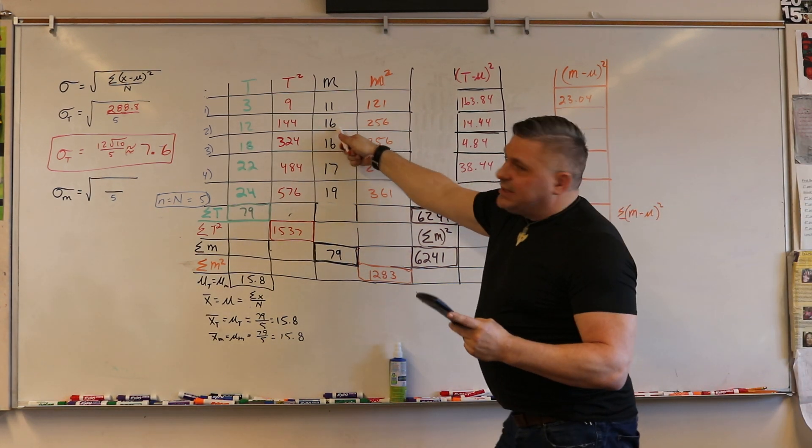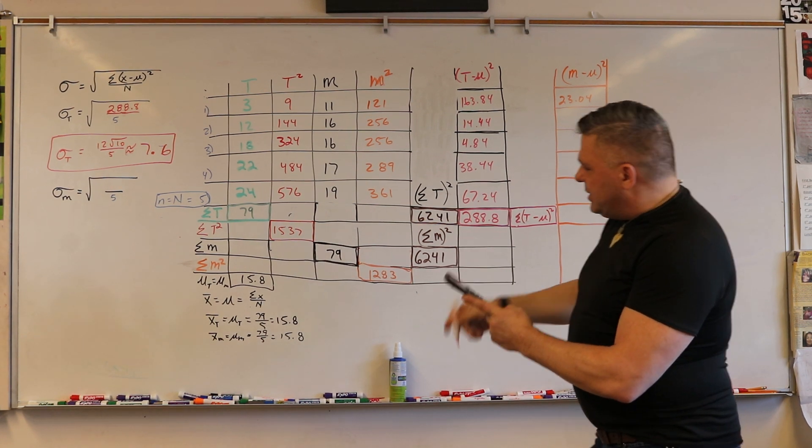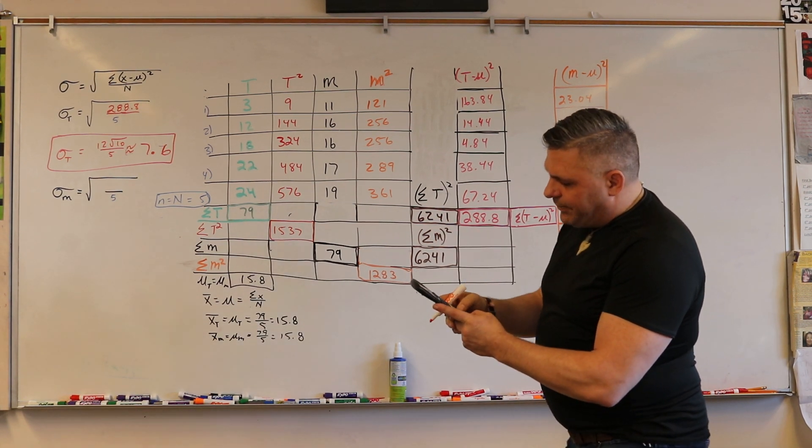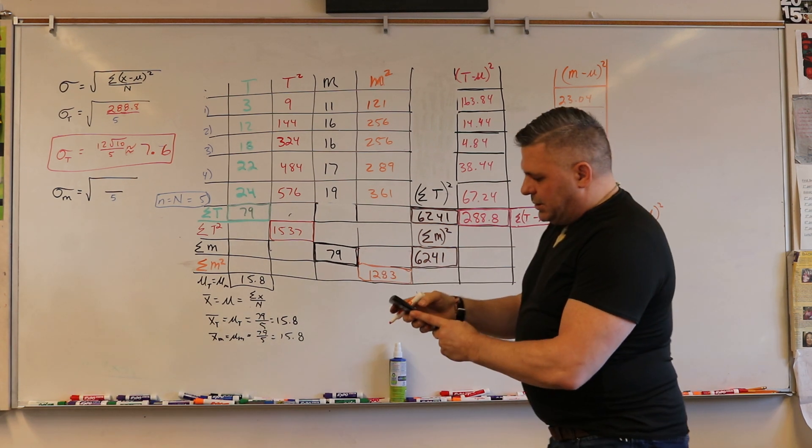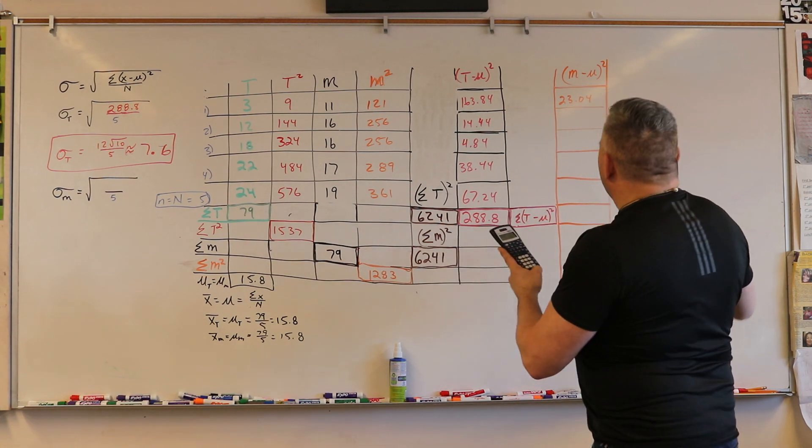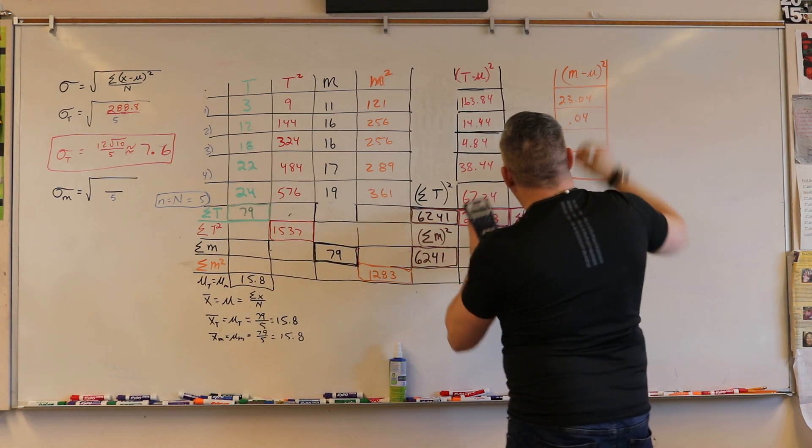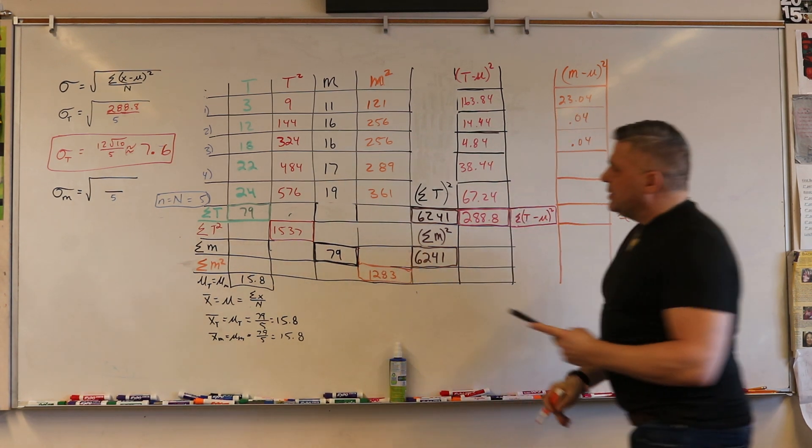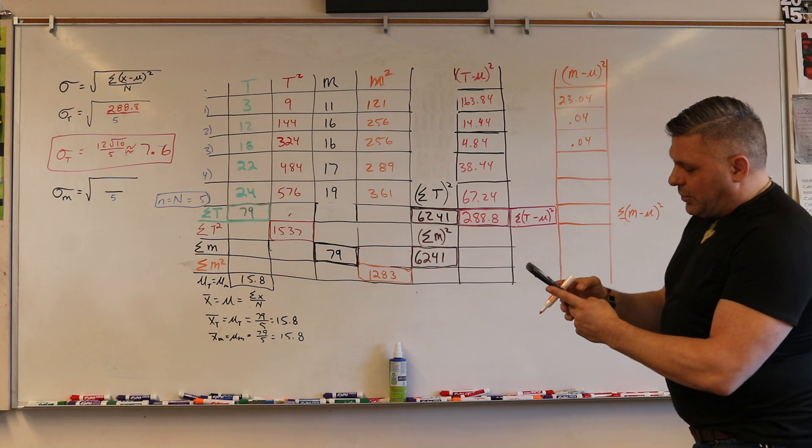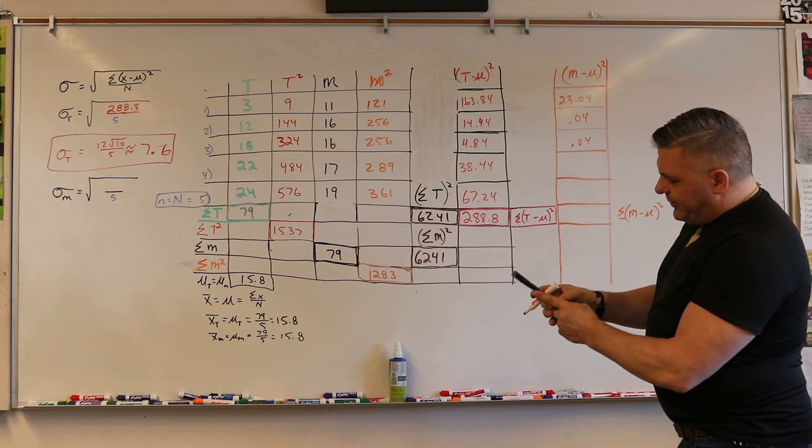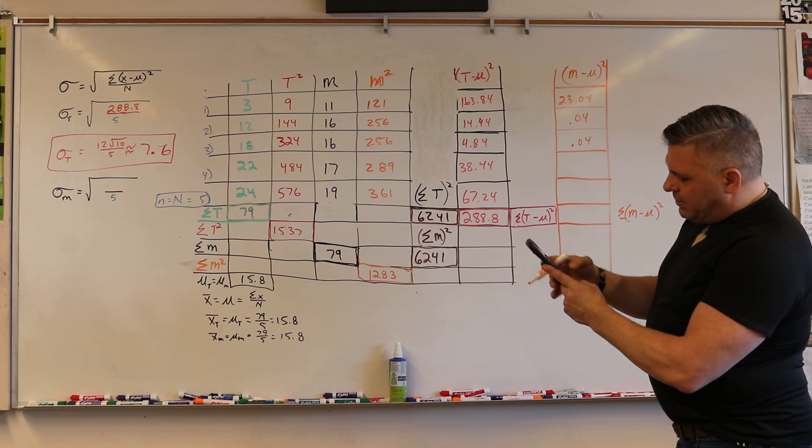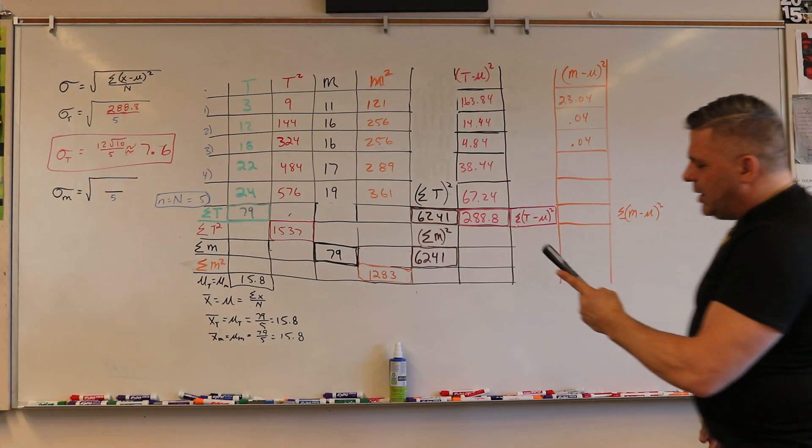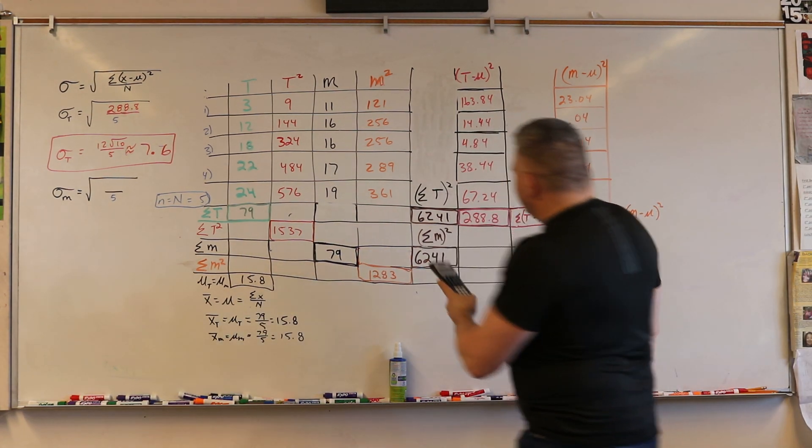Then we're going to take 16 minus 15.8, which we know is 0.2, and then we square it and we get 0.04. Then we're going to take 16 again, so we're going to get 0.04 again. Then we're going to take 17, so 17 minus 15.8 equals 1.2, then we square it and we get 1.44.